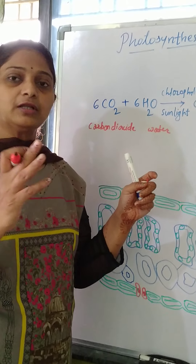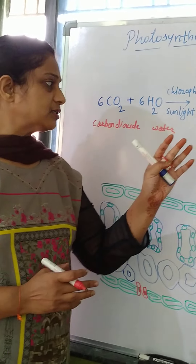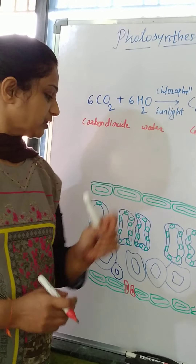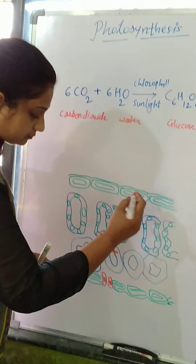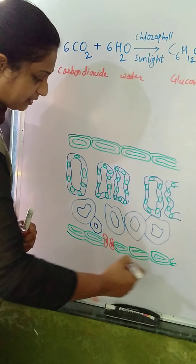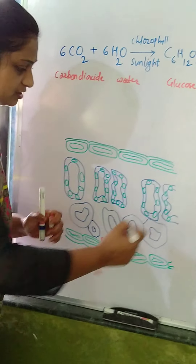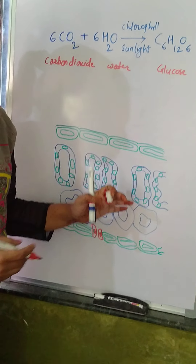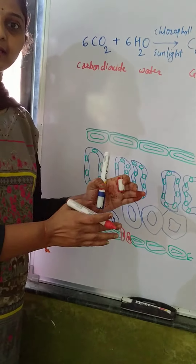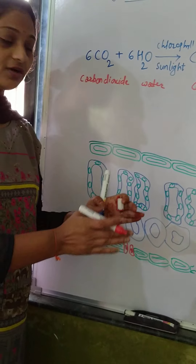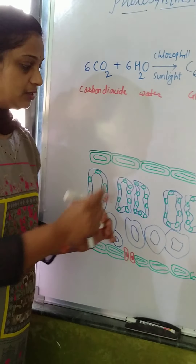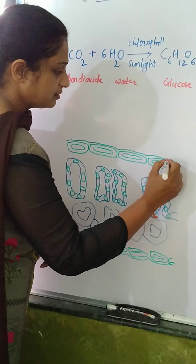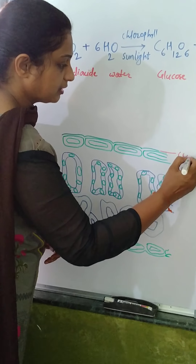That is the glucose. Now let's see what happens actually in this process. You can see here it is the diagrammatic representation — it is the transverse section of a leaf. So when we take the transverse section of a leaf, we see it like this. This layer here is the cuticle.